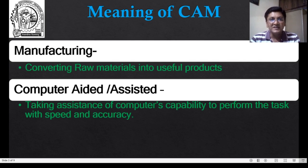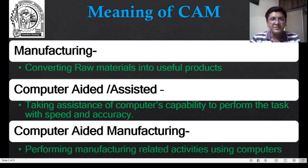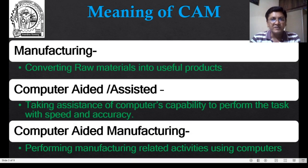When we combine these two words and ideas, it becomes the underlining philosophy of Computer Aided Manufacturing. So, Computer Aided Manufacturing means performing manufacturing-related activities using computer speed and accuracy.